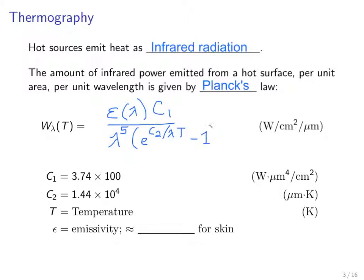This is Planck's Law — it tells you the power density per unit wavelength. The fixed constants C1 and C2 are given, T is the temperature in Kelvin, and epsilon is the emissivity. It's very convenient that emissivity is about one for skin regardless of wavelength.